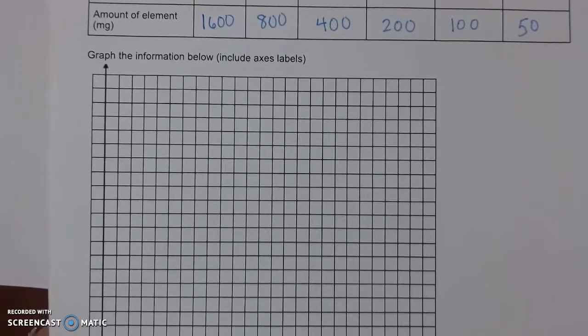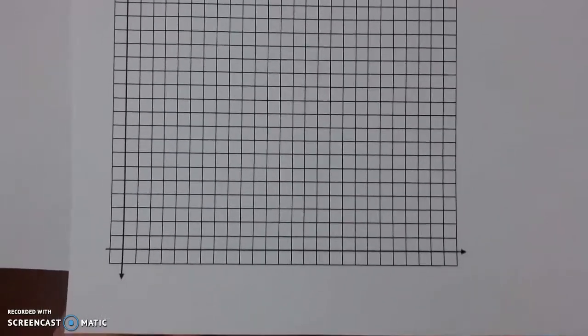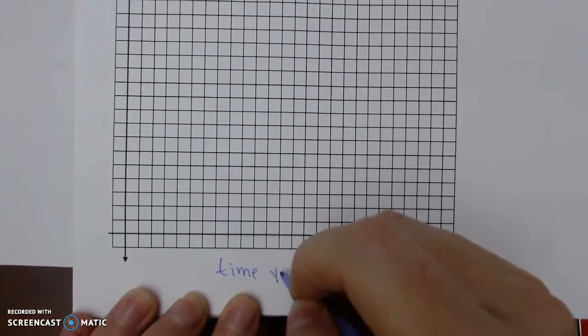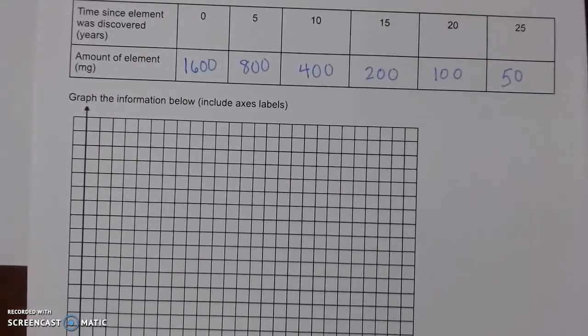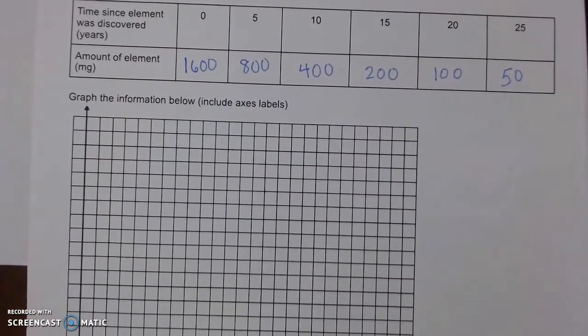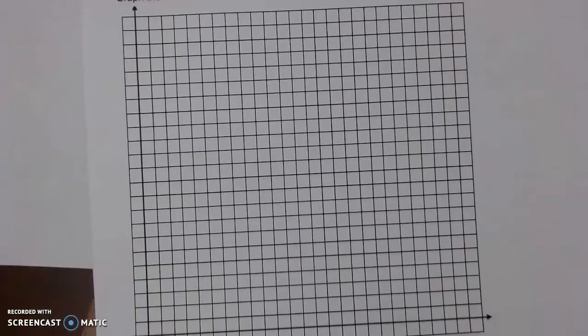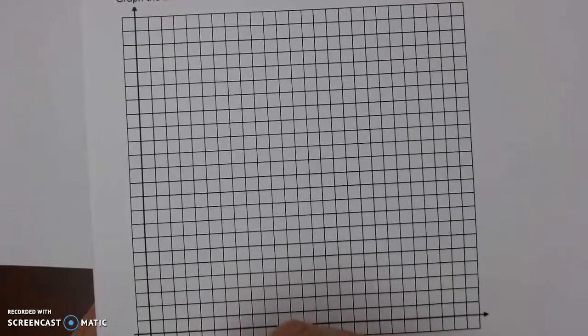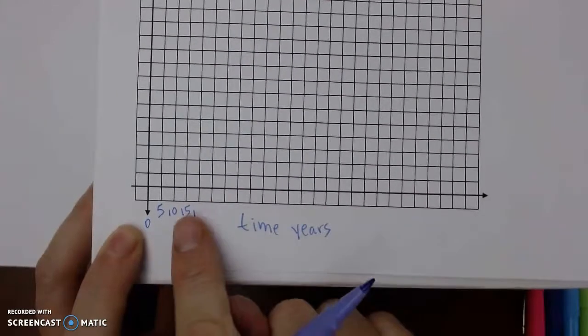The next thing is they want us to graph the information. On the x-axis we're gonna let this be our time in years. Since I'm going up to 25, I think we can change this increment. I'm just gonna let every five years, and you get to decide.